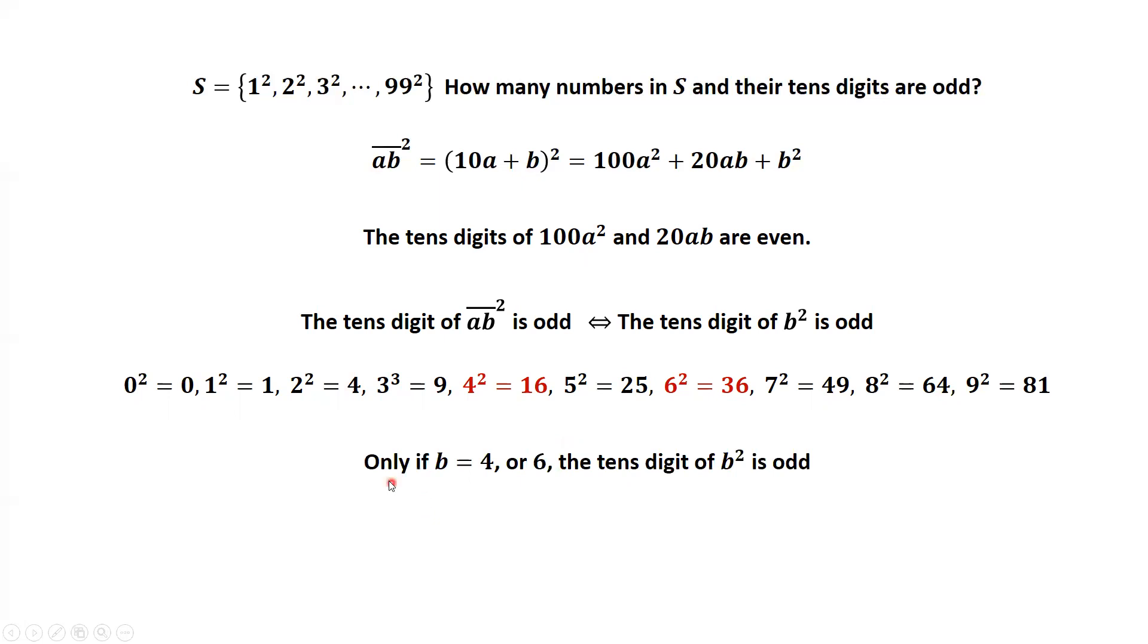We have the conclusion. Only if B equals four or B equals six, the tenth digit of B squared is odd.